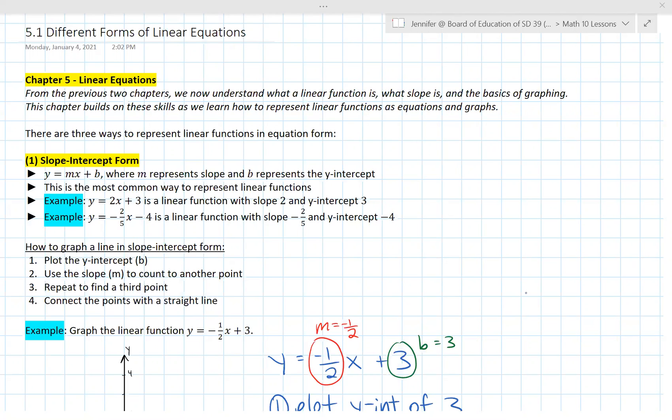This is the first lesson of chapter 5 which is on linear equations. In the last two chapters we understood what a linear function is, we were introduced to slope, and we talked about the basics of graphing. This chapter 5 builds on all of those skills as we learn how to represent linear functions as equations and graphs. The main part of this lesson is we're going to learn three different ways to represent linear functions in equation form.